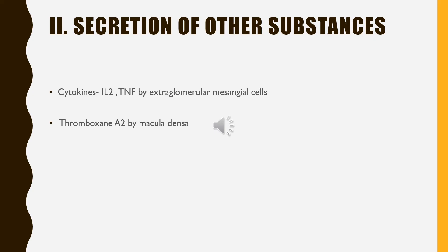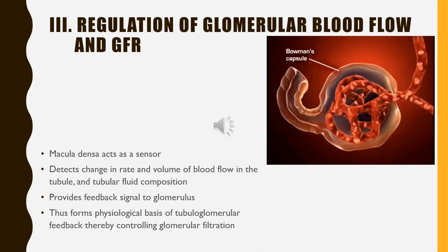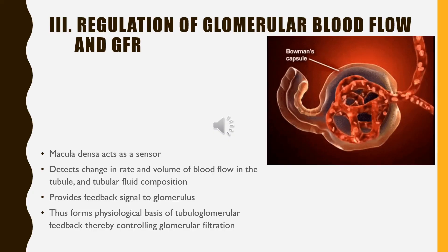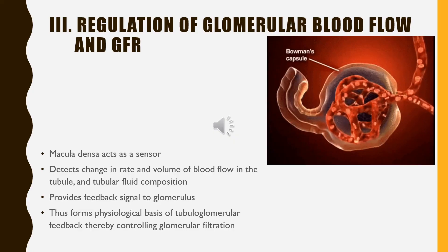The second important function of the juxtaglomerular apparatus is the secretion of substances like cytokines — that is, interleukins 2 and tumor necrosis factor — by the extraglomerular mesangial cells, and thromboxane A2 by the macula densa. The next important function is the regulation of glomerular blood flow and glomerular filtration rate. The macula densa acts as the sensor which detects the change in rate and volume of blood flow in the tubules and tubular fluid composition, providing feedback signal to the glomerulus — forming the physiological basis of tubuloglomerular feedback — thus controlling glomerular filtration.